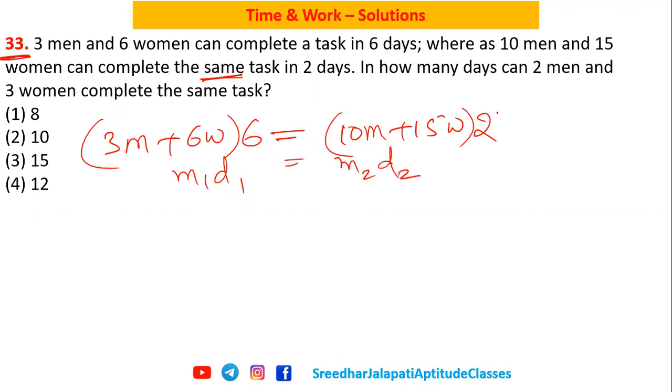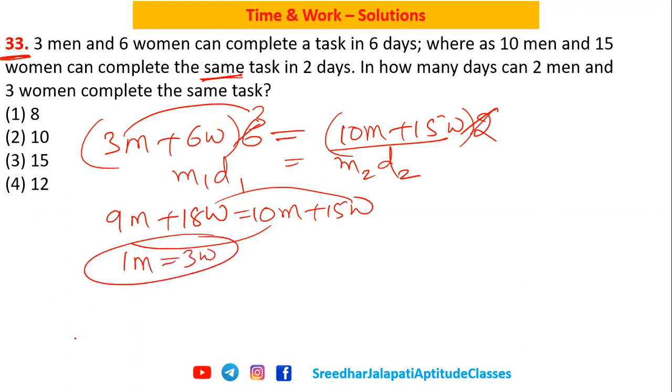So if I simplify, further simplification: 3 into 3 is 9 men, so 9 men plus 6 into 3, 18 women equals on the right hand side, these two already got cancelled, we have 10 men plus 15 women. Now I am bringing all men one side, women other side, so we'll get it as one man equals three women.